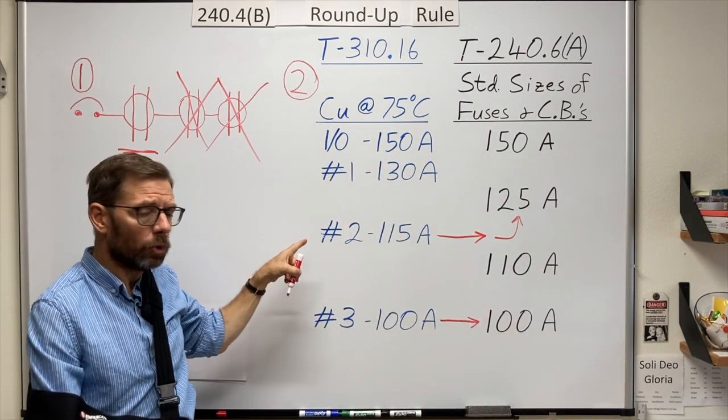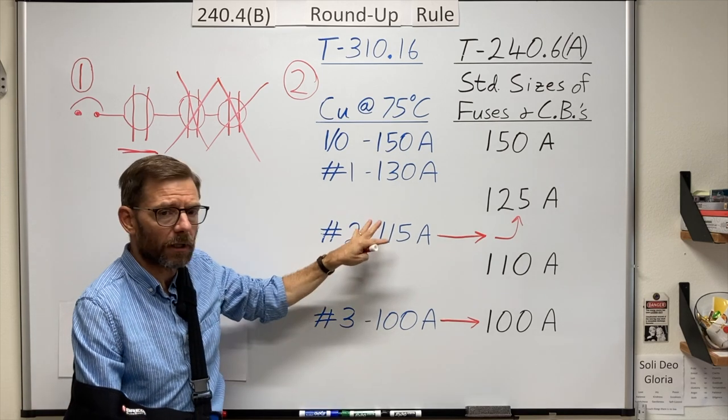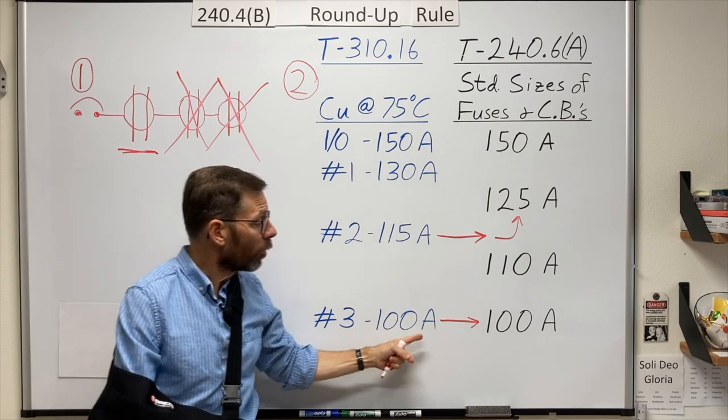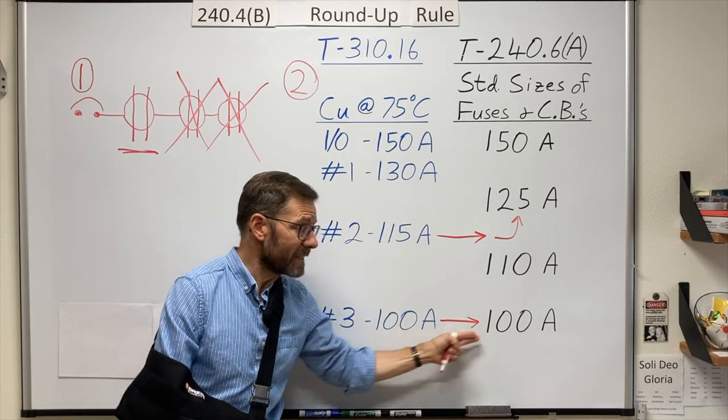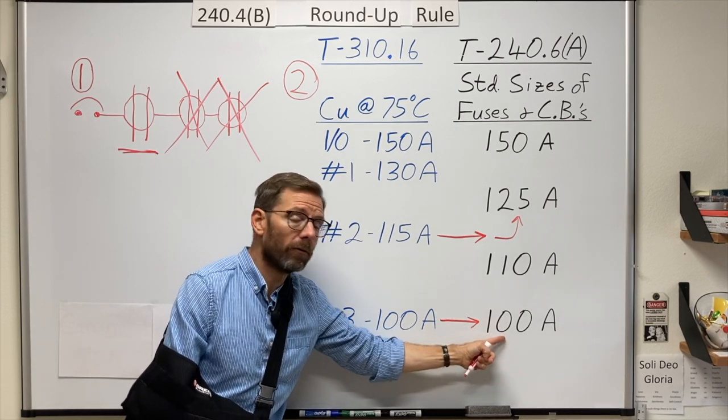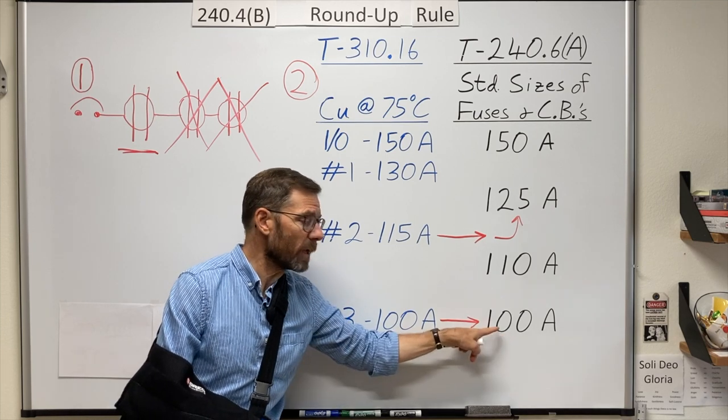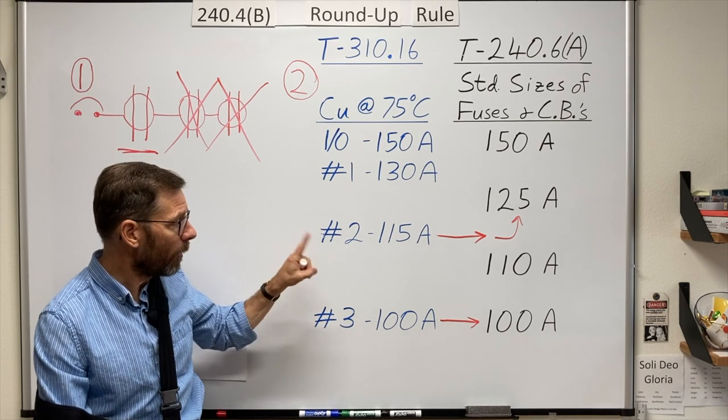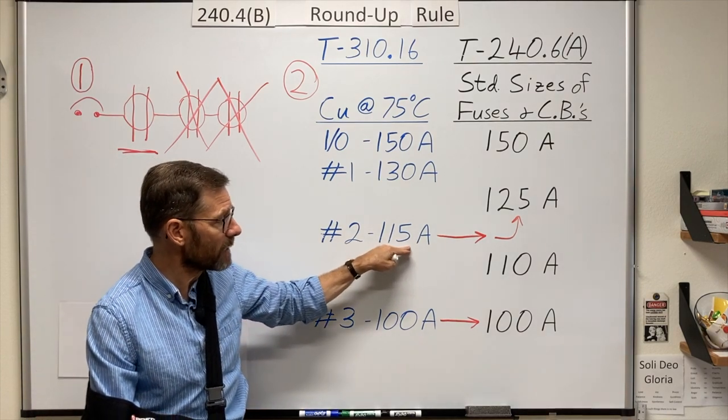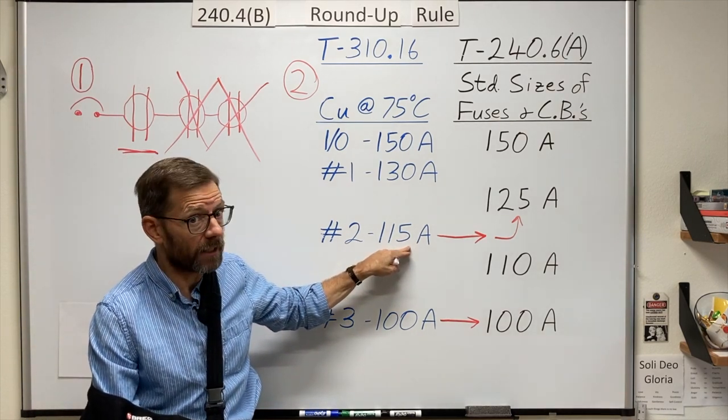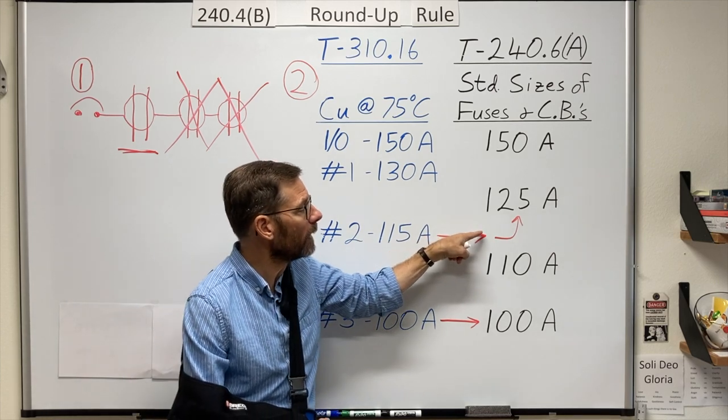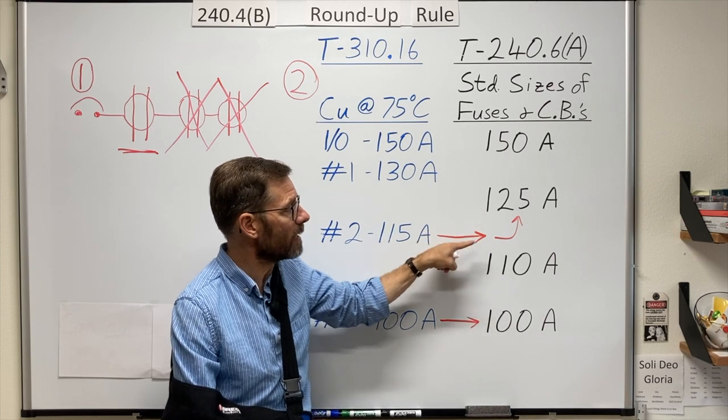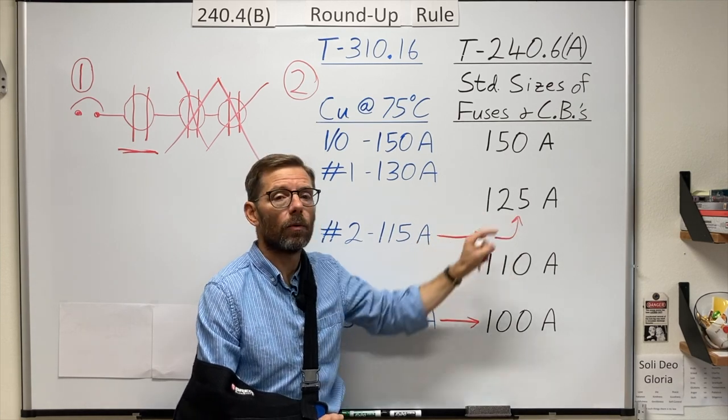Condition number two is largely what we've been talking about here. And it tells me that if a conductor's ampacity corresponds to, or exactly matches, an overcurrent device standard size, then that's what I'm stuck with. That would be the max for this number three. However, if that conductor's ampacity, like I said earlier, after any derating, comes in between, it does not correspond to a standard size, then I can protect it with the next bigger.